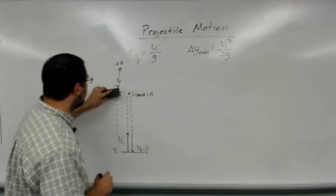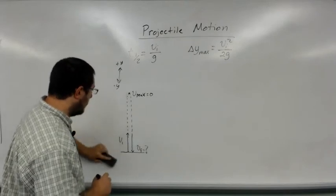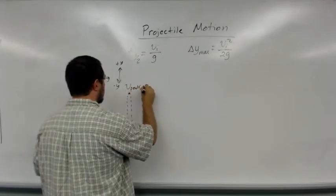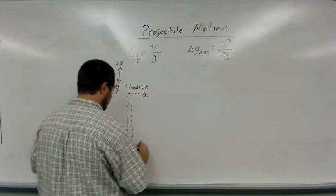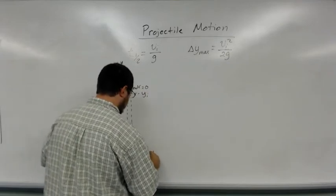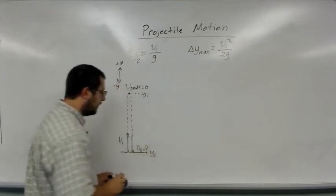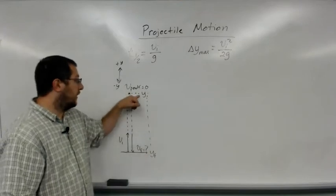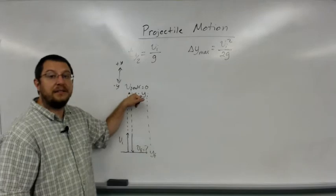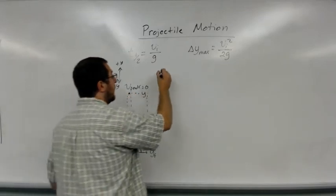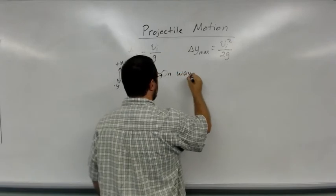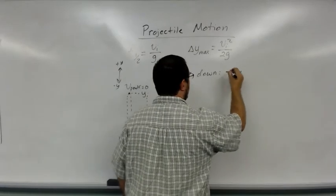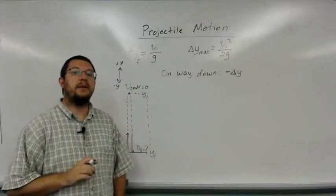But if I analyze the motion on the way down and make this y initial and ground level y final, then y final minus y initial—zero minus something positive—gives me a negative number. So on the way down, Δy is negative.